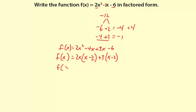The next part is the grouping. We're going to have this 2x and then plus the 3 from right here. That's going to be our first binomial factor. And the x minus 2 is going to be the second binomial factor.